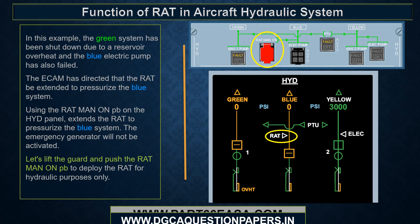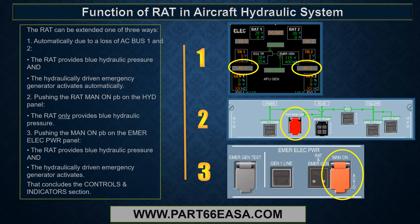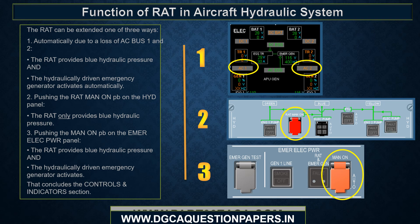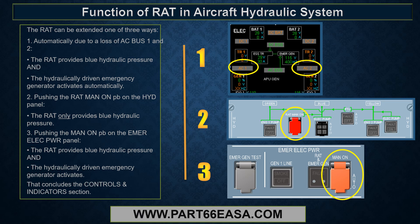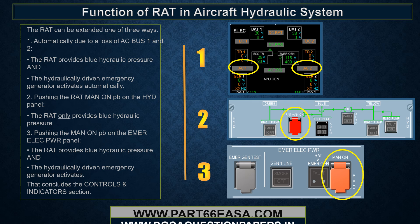The RAT can be extended in one of three ways. First, automatically due to a loss of AC bus 1 and 2 — in that case the RAT provides blue hydraulic pressure and the hydraulically driven emergency generator activates automatically. Second, by pushing the RAT MAN ON push button on the hydraulic panel — in that case the RAT only provides blue hydraulic pressure. Third, by pushing the MAN ON push button on the emergency electrical power panel — in that case the RAT provides blue hydraulic pressure and the hydraulically driven emergency generator activates. That concludes the controls and indicators section.